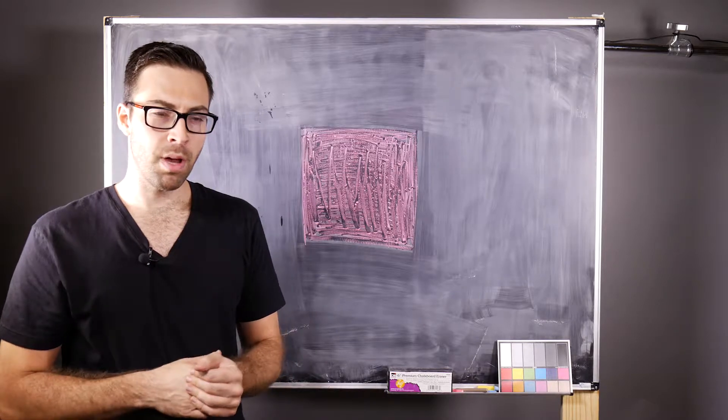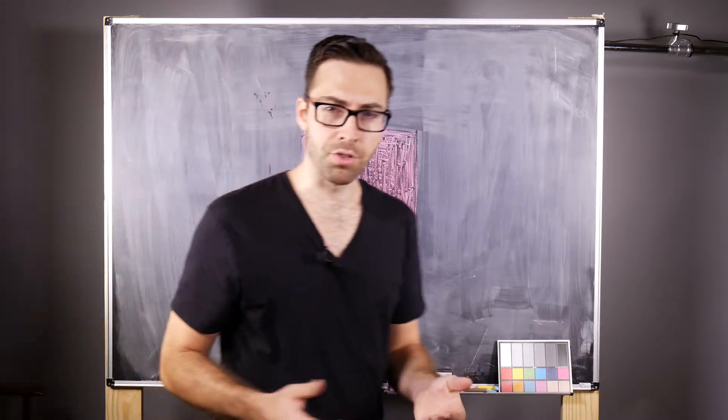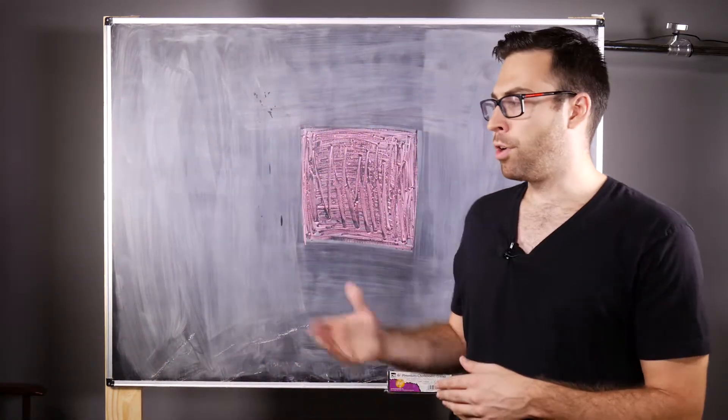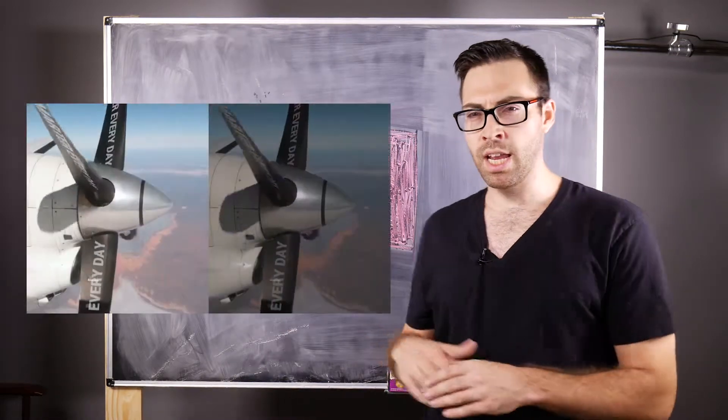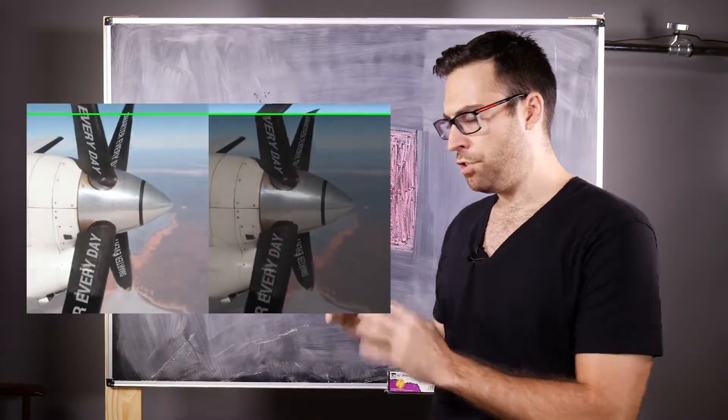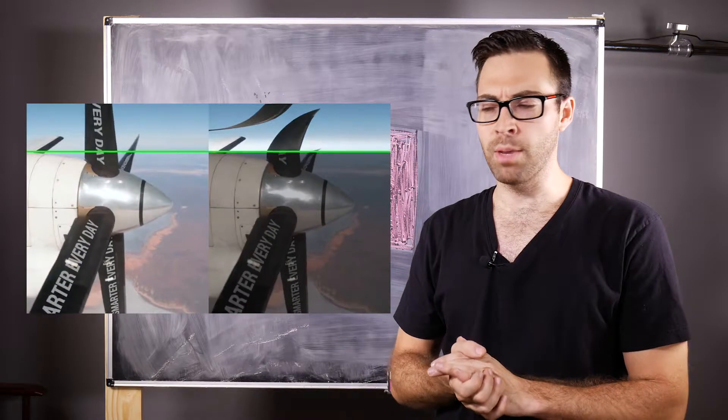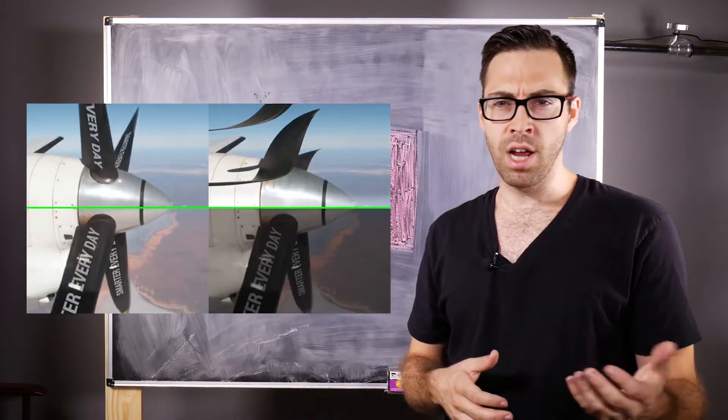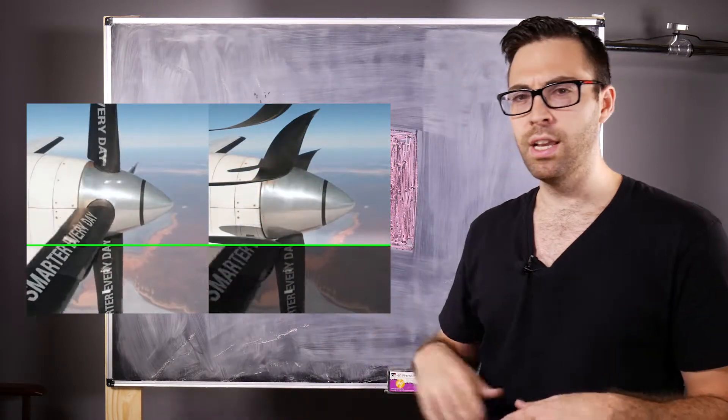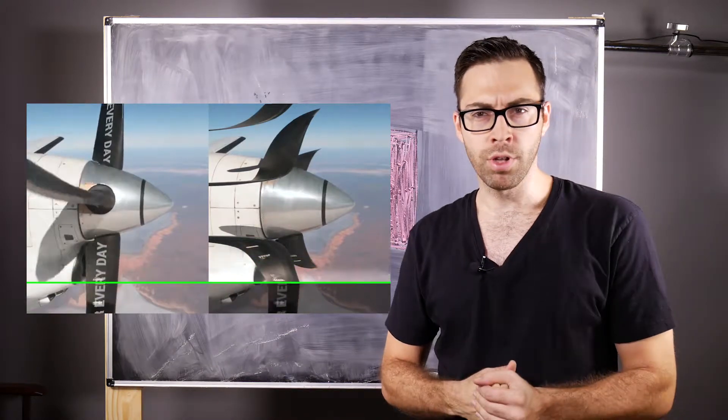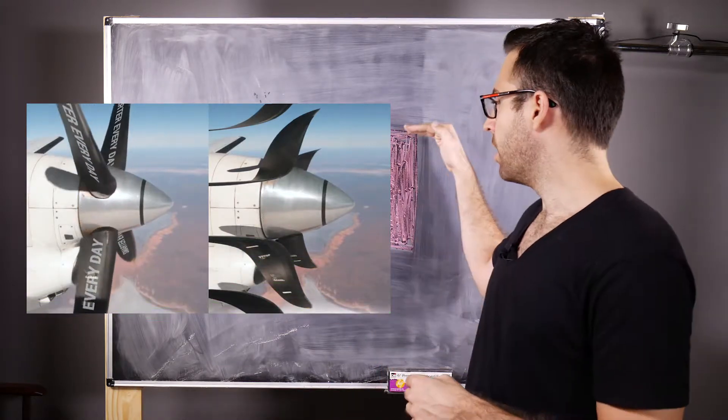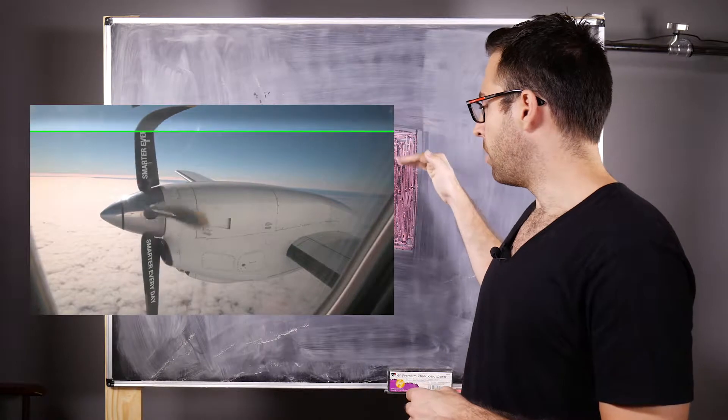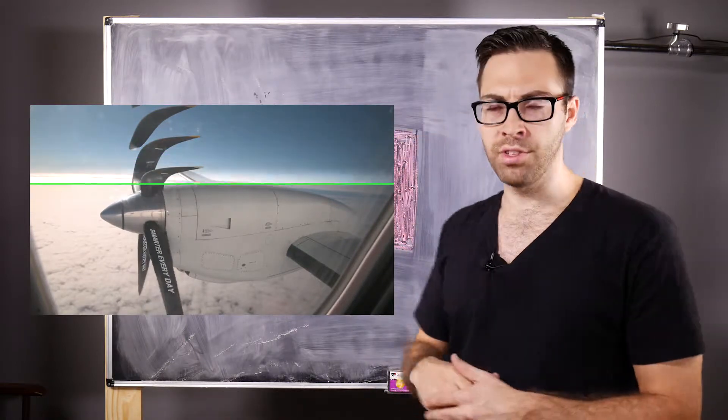The next video is going to be about rolling shutter, and there's another channel called Smarter Every Day. Smarter Every Day has a great video with an interesting take. They're going to talk about electronic sensors and sensors on your iPhone and how it reads line by line. But it's the same type of problem, this rolling shutter problem of sampling one section, one line of the shutter at the same time.